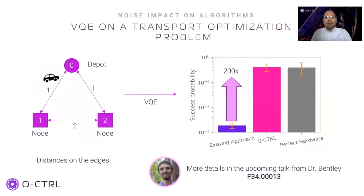As a sneak preview, let me also show you the results obtained from the simulations on a simple toy model transport optimization problem. On the left, we see a graph describing the transport problem: given a single depot with one vehicle, what is the optimal route to visit each node once? We solve this problem using the VQE algorithm with and without over-rotation noise in the simulations. Q-Control robust pulses show a 200x enhancement with respect to the existing approach and again completely suppress over-rotation noise. My colleague Chris Bentley will discuss this in detail in his next talk.